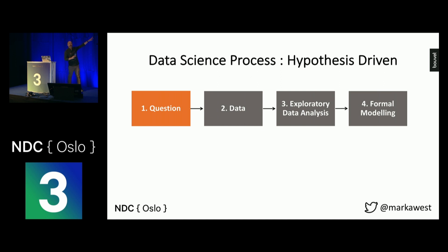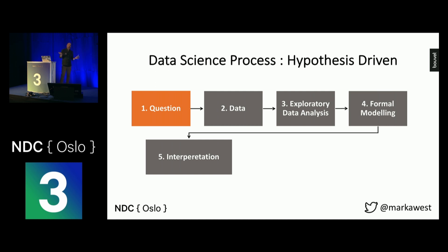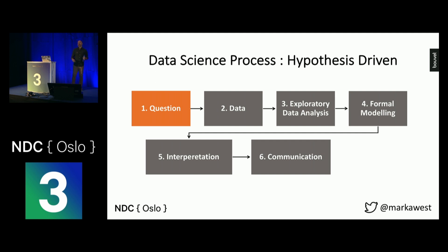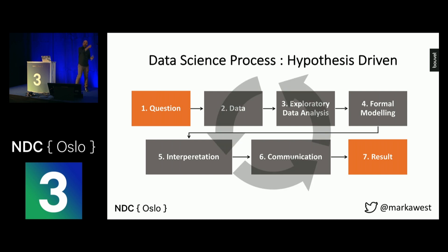You can use machine learning in step three to understand the data, but step four is creating a model to prove your hypothesis — that happens after you've gathered and understood your data. The next step is interpreting the output, which may not be what you expect. And then communication — that requires storytelling skills, because if you're communicating to stakeholders who don't know anything about math and statistics, you're going to struggle. Of course, all of these steps are iterative. Microsoft has their Team Data Science Process, there's the older CRISP data mining process — they all have these basic things in common.